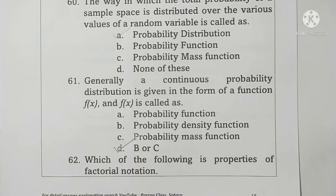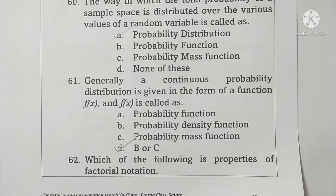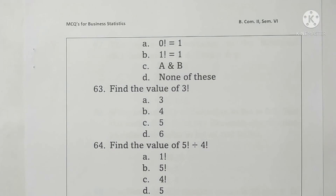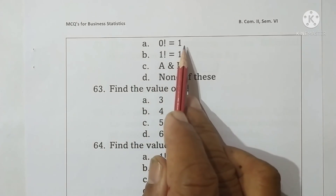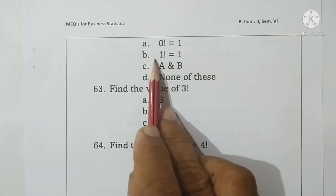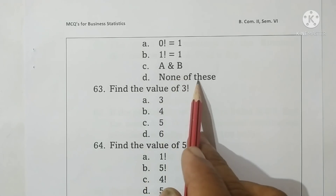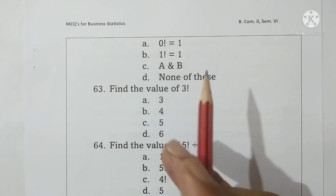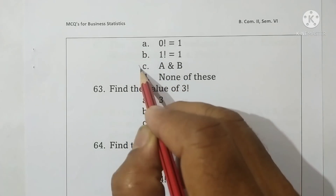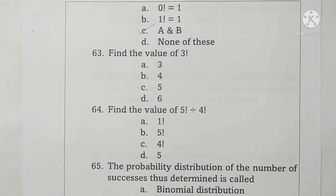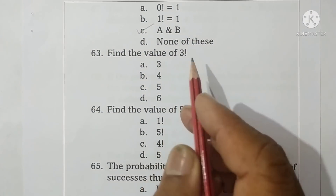Question 62: Which of the following are properties of factorial notation? Options: 0 factorial equals 1, 1 factorial equals 1. Both A and B are correct, therefore option C is correct. The value of 3 factorial is 3 multiplied by 2 multiplied by 1 equals 6.